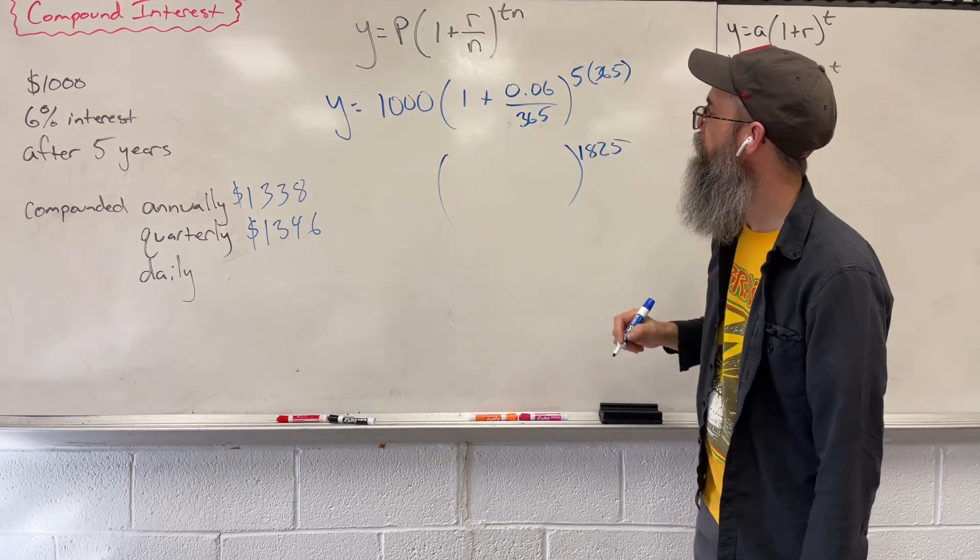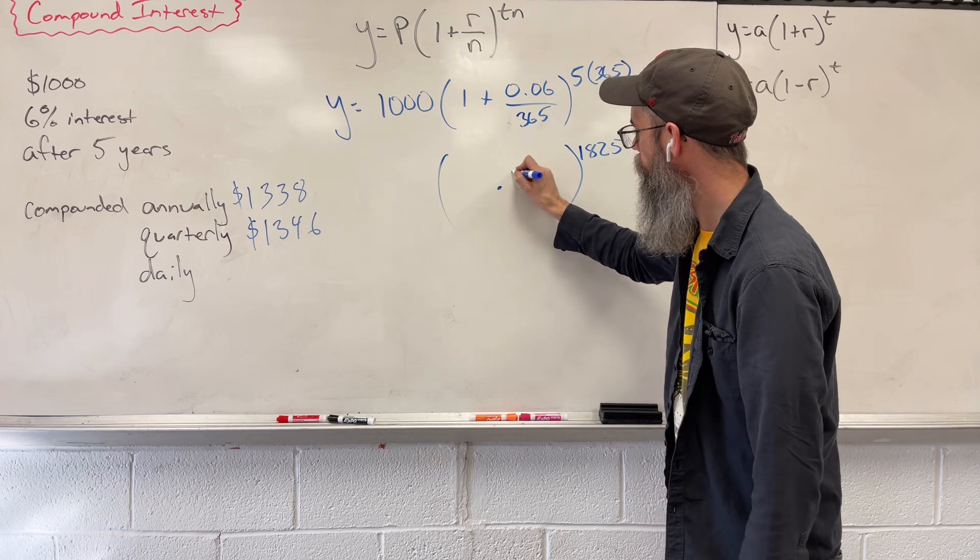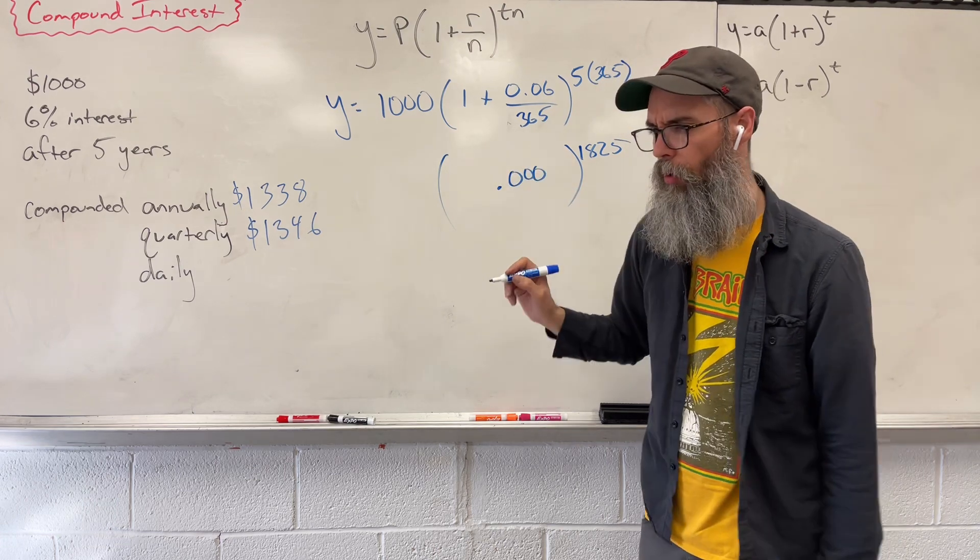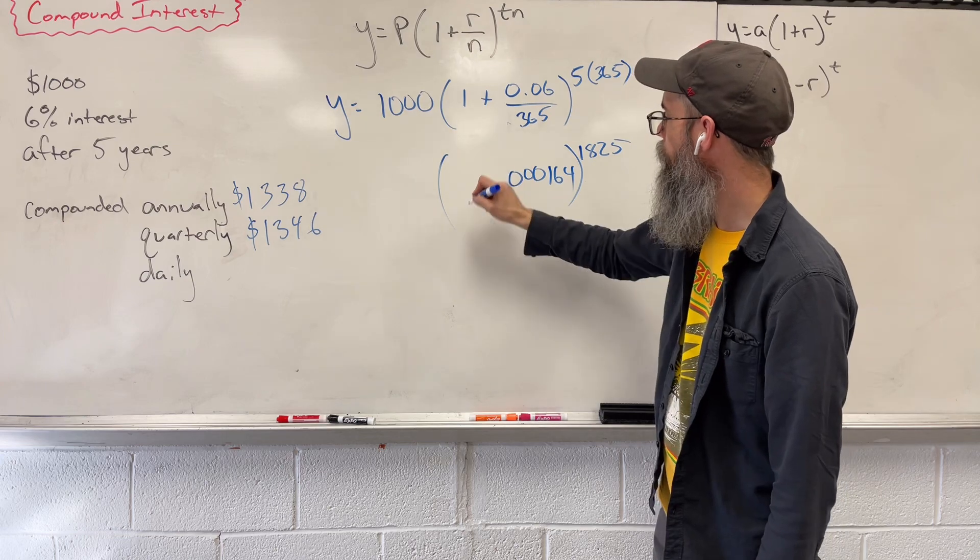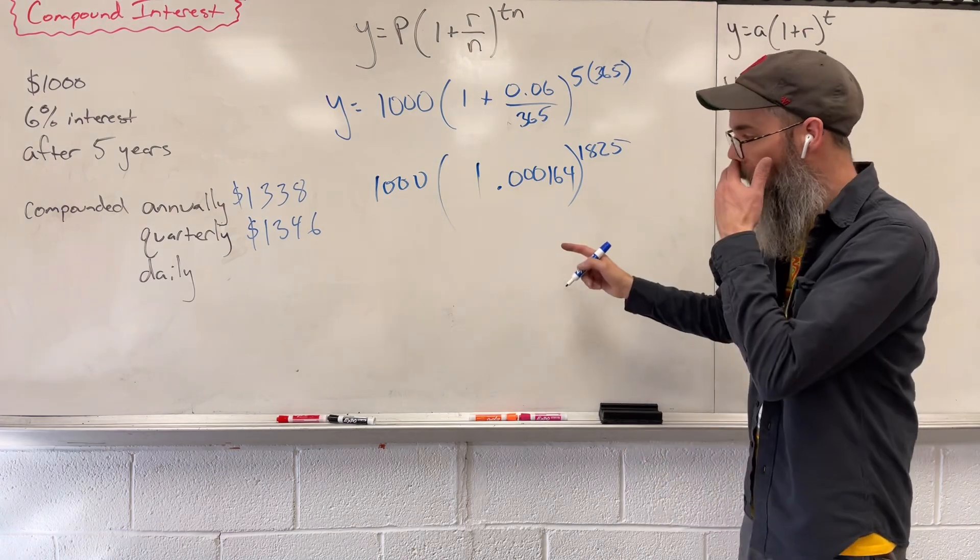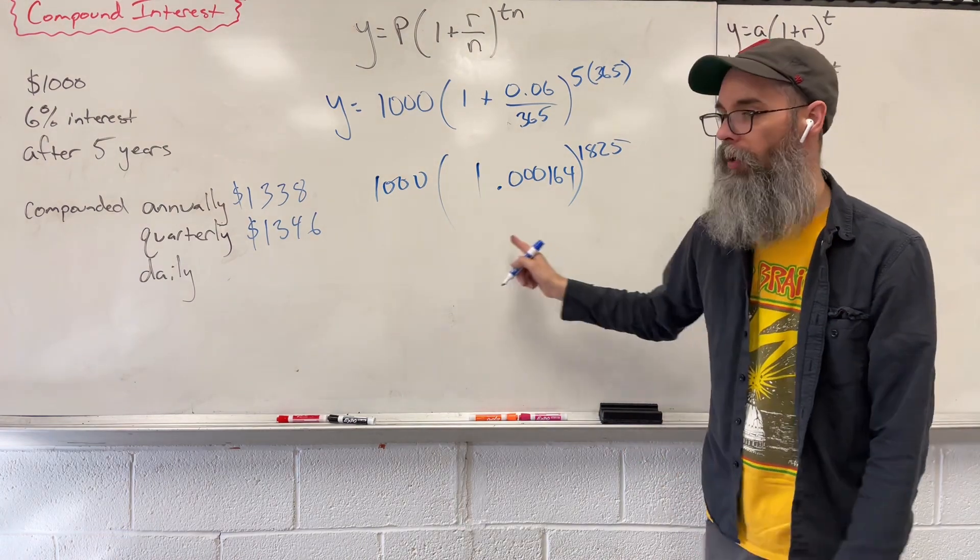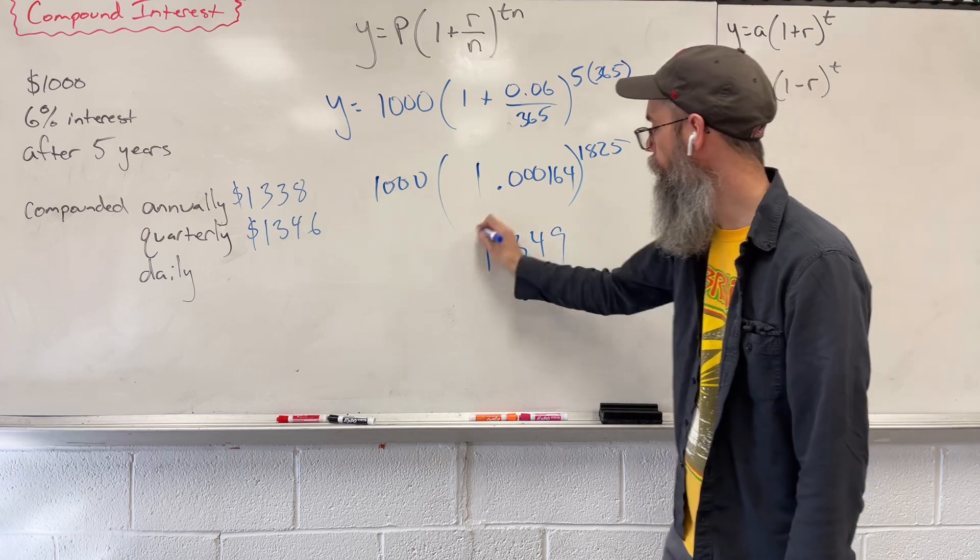Inside, 0.06 divided by 365 is going to be 0.000164. And then we got to add 1 to that. We get that. And then our $1,000 that we start with. Order of operations. We raise it to the exponent and then multiply it. We are left with 1.349.